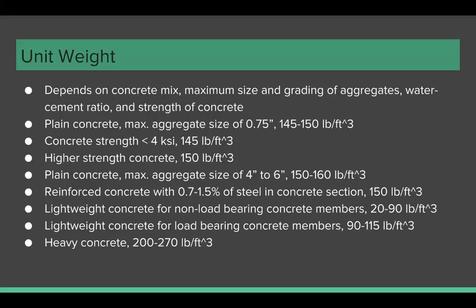For plain concrete with a maximum aggregate size of ¾ inch, the unit weight is 145 to 150 pounds per cubic foot. If the strength is less than 4000 psi, 145 pounds per cubic foot can be assumed. For higher strength concrete, 150 pounds per cubic foot can be assumed.